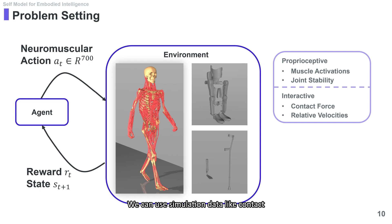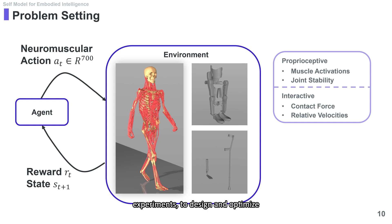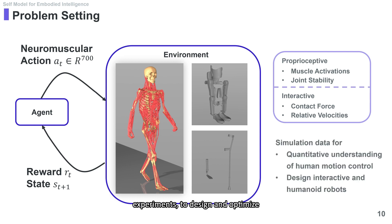We can use simulation data like contact force and relative velocities, which could be hard to collect in real experiments, to design and optimize robots such as exoskeletons, prosthetics, and even humanoids.